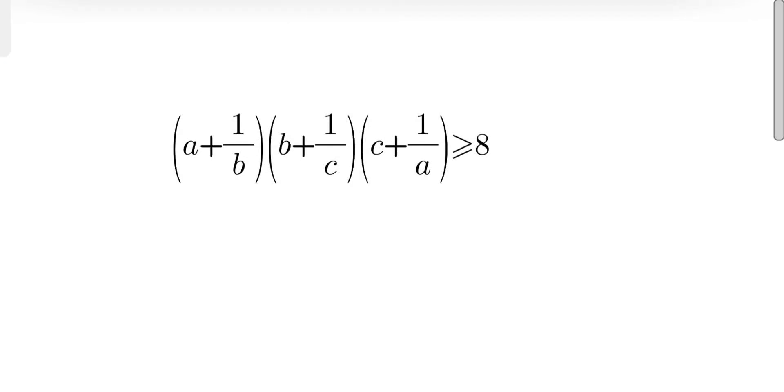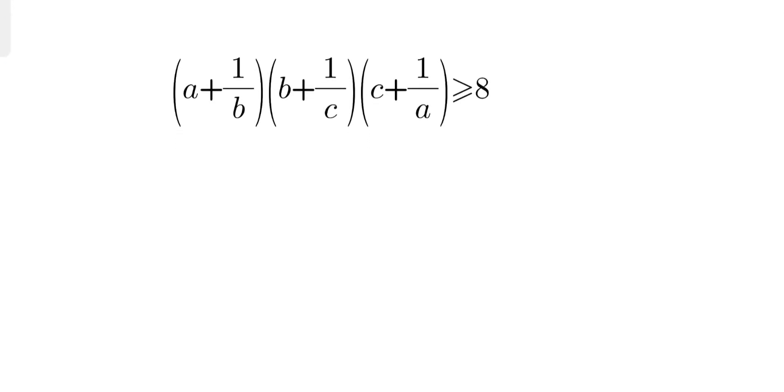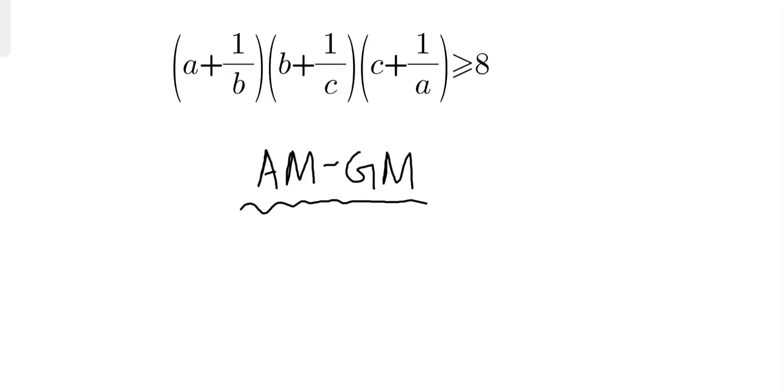Well, here we will use AM-GM inequality to prove this statement. What is AM and GM inequality? Let me explain in a very short way. So AM-GM inequality says if a, b are positive real numbers, then their arithmetic mean is greater than or equals to